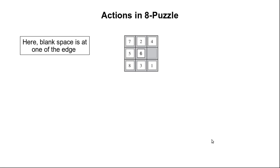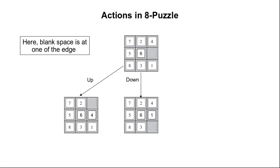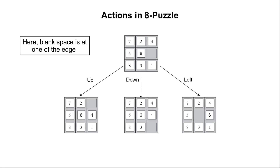Next, consider a configuration where the blank space is at one of the edges. When the blank space is at one of the edges, only three different actions are possible. For example in this case, the blank space can either move upward, downward, or to the left. Since it is at the edge, it cannot move to the right in this particular configuration.